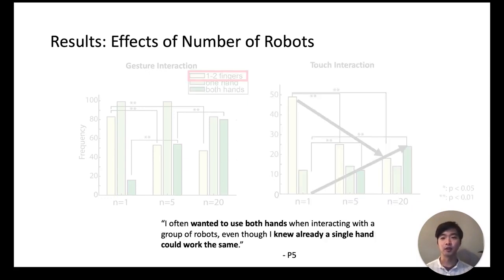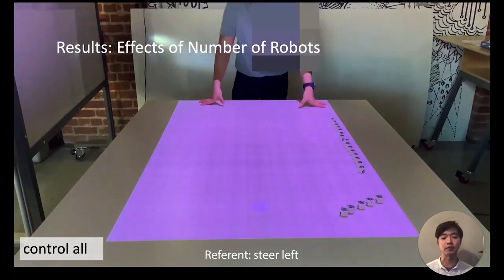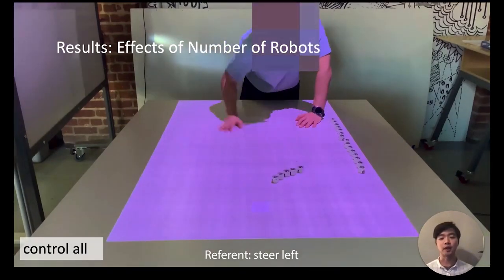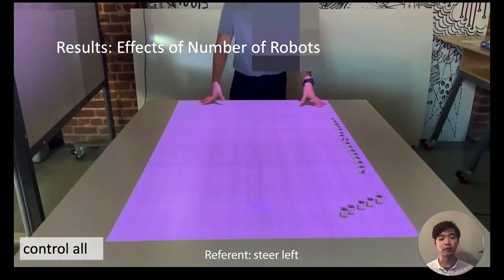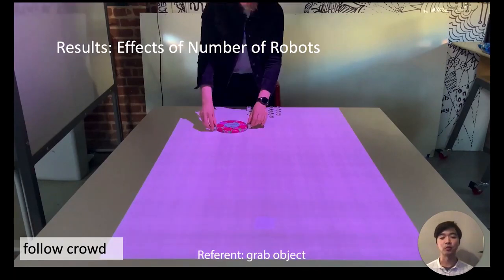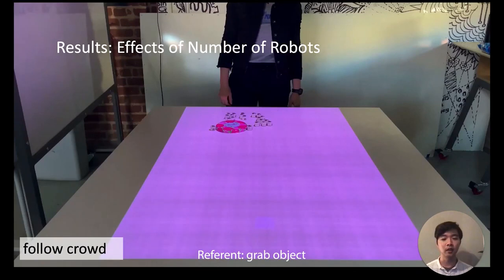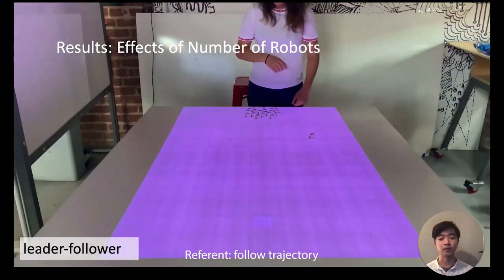Regarding the effects of number of robots, participant P5 commented after the study that 'I often wanted to use both hands when interacting with a group of robots even though I knew already a single hand could work the same.' We also saw an effect of number of robots on how users control many robots. With more robots, instead of trying to directly touch all of the robots like done here, participants were more likely to use a different strategy where they only control a subset of the robots like here, or only just one of the robots and expected the rest to follow.